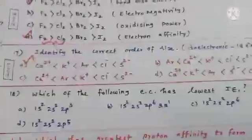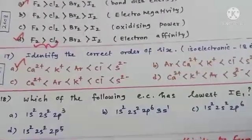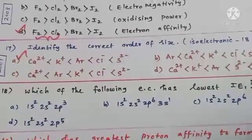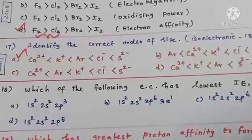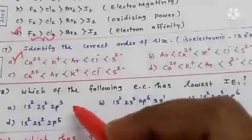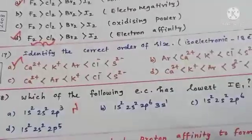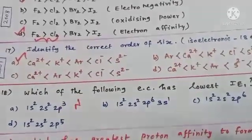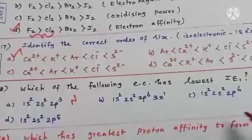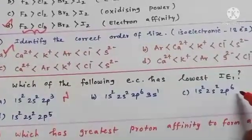Question 18: which of the following electronic configurations has the lowest first ionization enthalpy? Option A is 1s² 2s² 2p³ — the configuration of nitrogen, which has a stable half-filled configuration and probably greater ionization enthalpy. Option B is 1s² 2s² 2p⁶ — neon, with a fully filled p⁶ configuration.